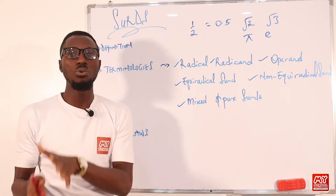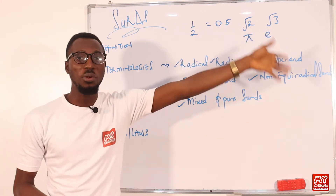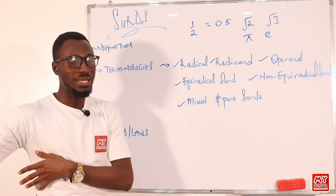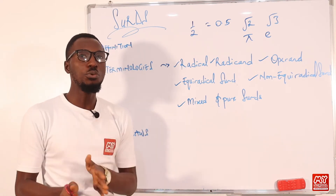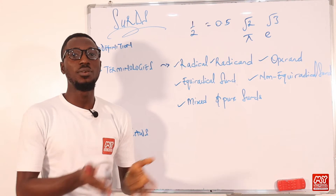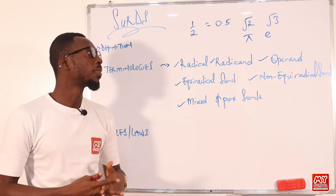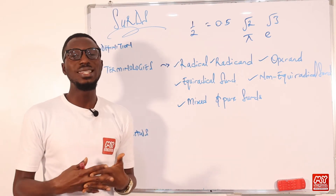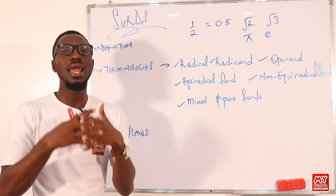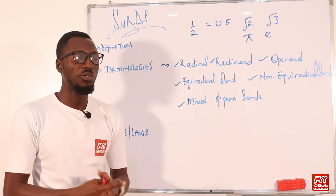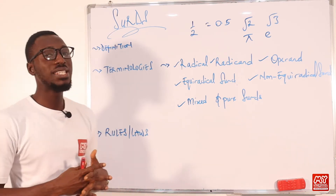We can also define a surd as the result you get by taking the square root of a non-perfect square. For example, 2 is a non-perfect square, so taking the square root of 2 gives you an irrational number. But if you take the square root of a perfect square like 4, you get 2, which is rational — so root 4 is not a surd. We can also describe a surd as an expression that contains the radical symbol whose value cannot be expressed in exact terms or exact quantity.